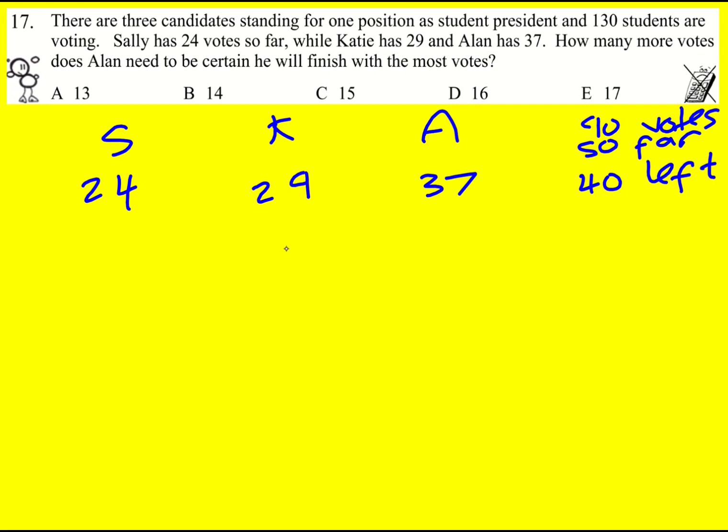So let's say Katie gets the next eight votes and goes up to 37 as well. Sally's still on 24. So now there's going to be 32 left.